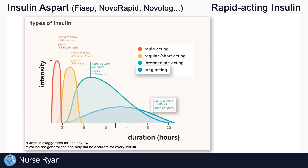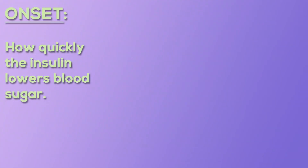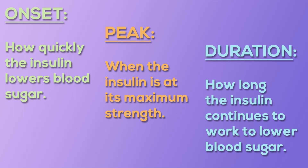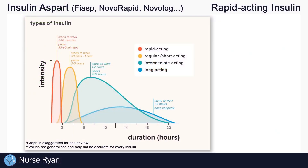Each of these different types of insulin have three main things that set them apart from one another: onset, which is how quickly the insulin lowers blood sugar; peak, which is when the insulin is at its maximum strength; and duration, which is how long the insulin continues to work to lower blood sugar.